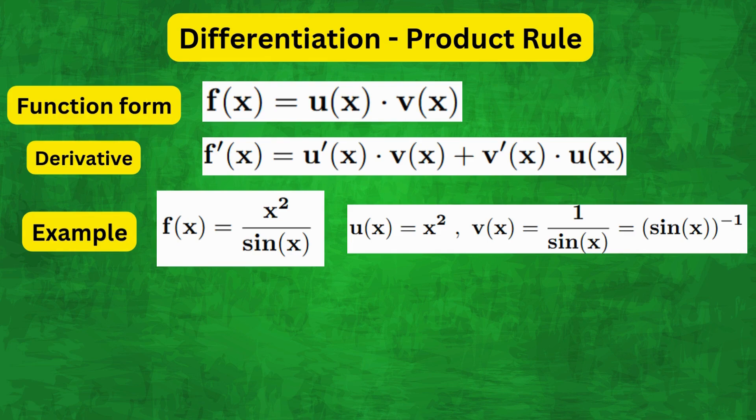Then from the product rule, we know that f'(x) equals u'(x)v(x) + v'(x)u(x). So u'(x) in this case is simply 2x. Now for v'(x) we can use the chain rule, so we get -1·sin(x)^(-2) times the derivative of sin(x), which is cos(x).